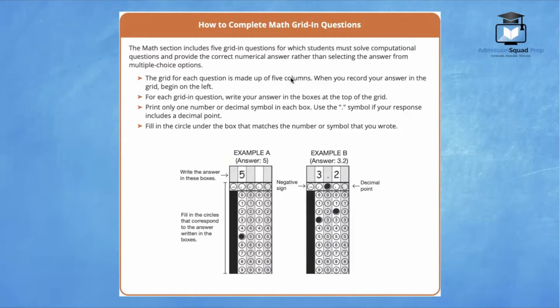The grid for each question is made up of five columns, as you can see in the images here below. When you record your answer in the grid, begin all the way to the left. For each gridding question, write your answer in the box at the top of the grid first. So for this example here, the student wrote the number five, and then they also bubbled in the number five here at the bottom.